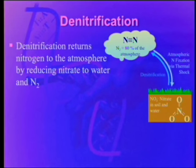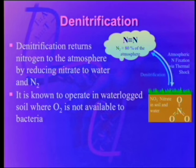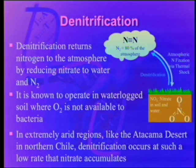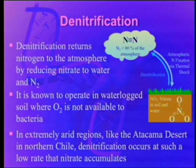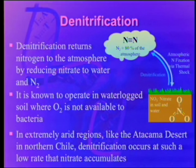What about denitrification? Denitrification returns nitrogen to the atmosphere by reducing nitrate to water and into gas form. It's known to operate in waterlogged soils where oxygen is not available to bacteria — they're actually using nitrate as an oxidizer in their metabolism. In extremely arid regions like the Atacama Desert, which is supposed to be the driest place on Earth in northern Chile extending up into Peru, denitrification occurs at such a low rate that nitrate accumulates. It's the only place I know of on Earth where nitrate has ever been commercially minable. That's why the Royal Navy blockaded the west coast of South America during the First World War — they didn't want the Germans getting that nitrate and making explosives out of it.